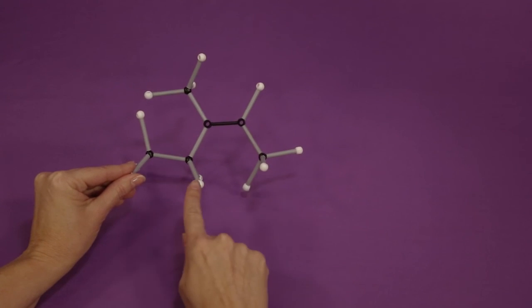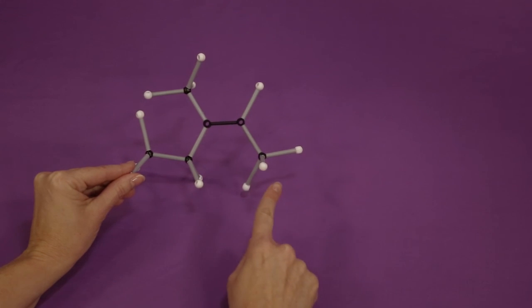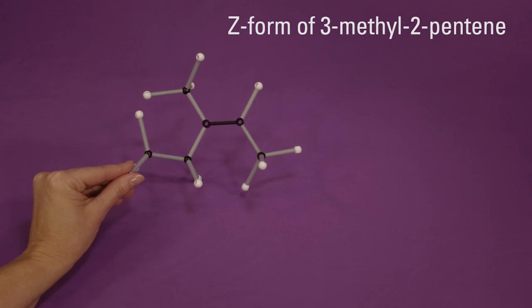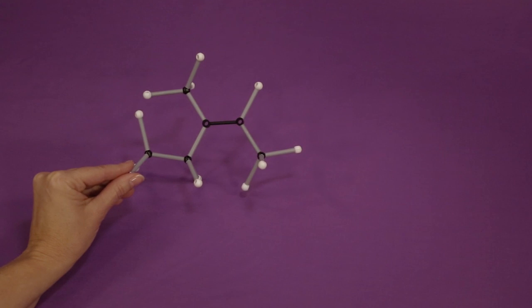Because the highest priority groups, the methyl and the ethyl, are on the same side, this is the Z form of 3-methyl-2-pentene. So this is called Z-3-methyl-2-pentene.